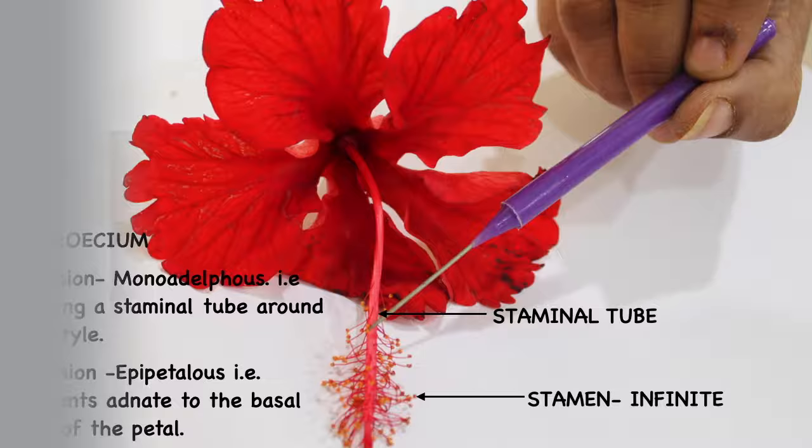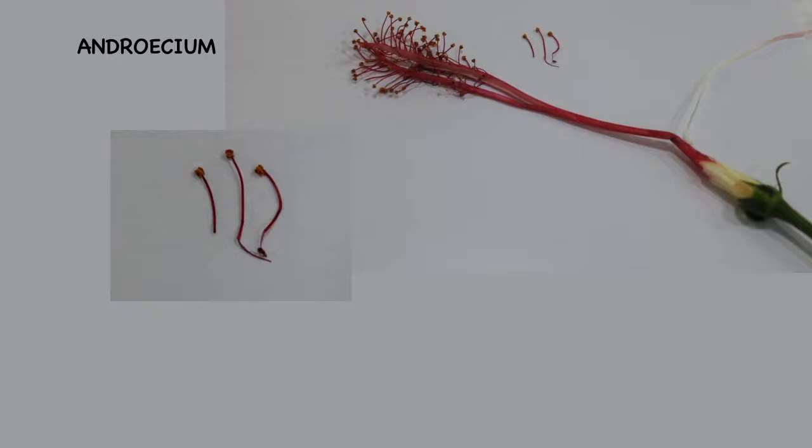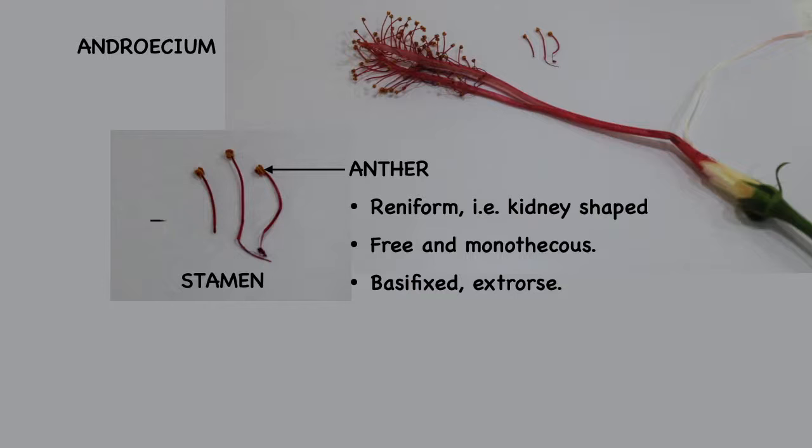Now let us have a look at the single androecium part, that is the stamen. The stamen has an anther and a filament. The anther here is kidney-shaped. It is free and monothecous. Also it is fixed to the base — that is basifixed — and extrorse. This part here is the filament.